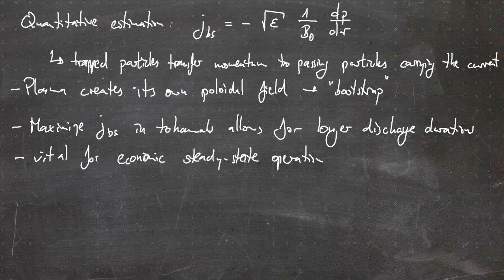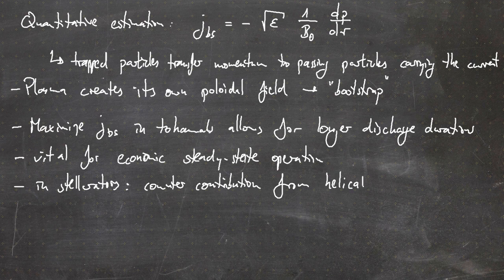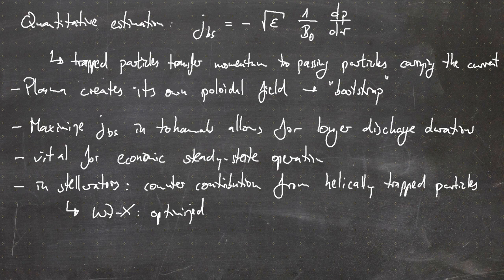In stellarators there is a counter contribution from helically trapped particles which goes in the opposite direction. W7-X, for example, is actually optimized for a minimum bootstrap current, such that these contributions cancel out and there is no additional bootstrap current which further modifies the magnetic field.